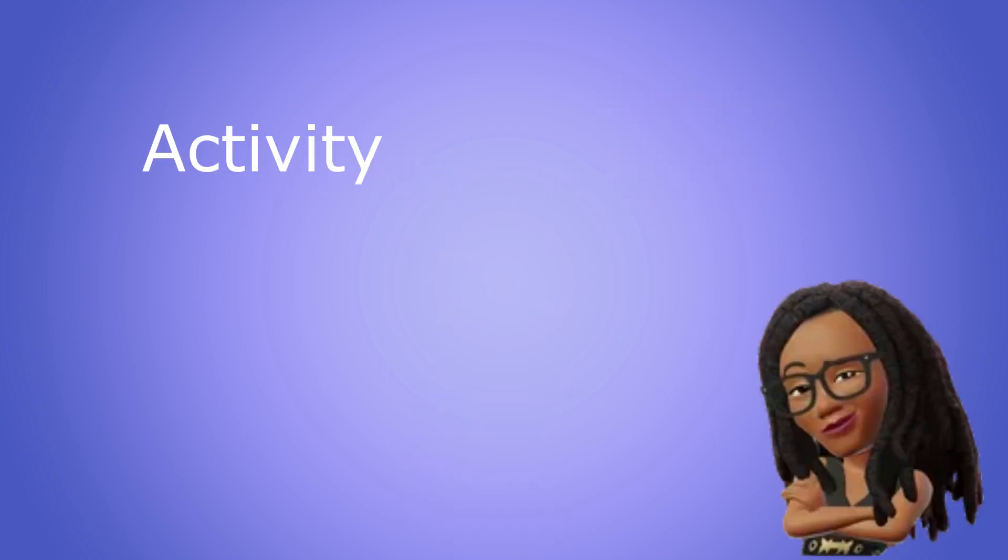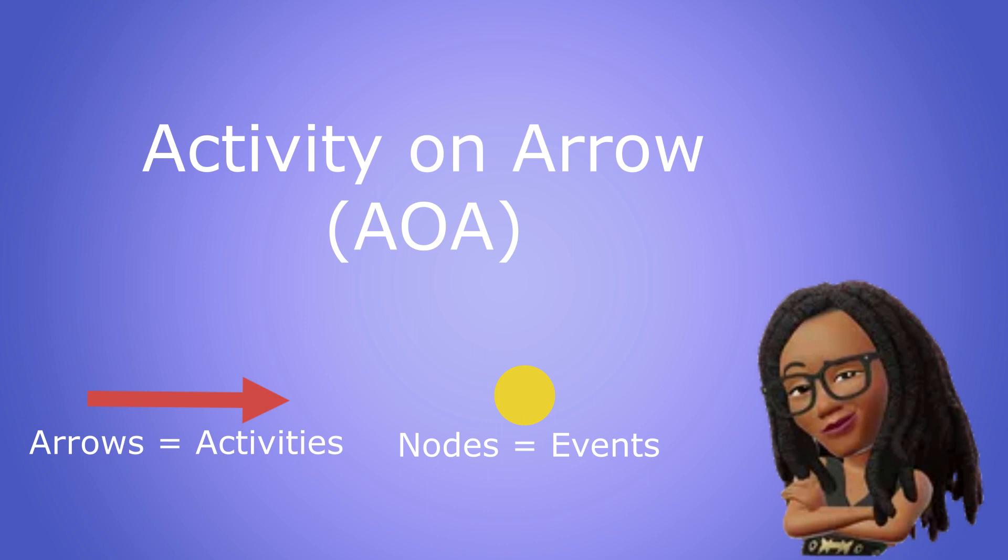An activity on arrow network diagram as the name suggests is one that uses arrows to represent activities and nodes to represent events or milestones.